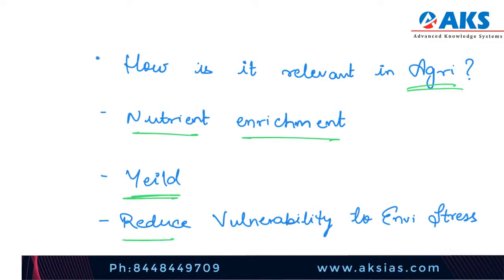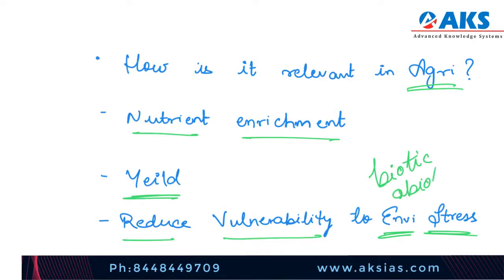Number three is reduced vulnerability to environmental stresses. Biotechnology allows the development of crops containing genes that enable them to withstand biotic as well as abiotic stresses. For example, drought and excessively salty soils are two significant factors that affect crop productivity. There are crops that can withstand these harsh conditions, and through genetic engineering you can improve the resilience of these crops so that they can withstand environmental stresses.